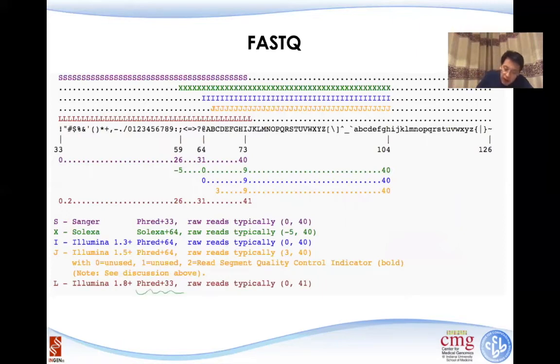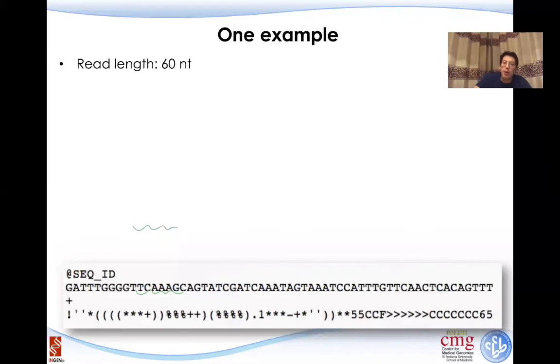Most of them is just the PHRED, the Q score plus 33, and that is the rule that we have. Let me give you an example here.